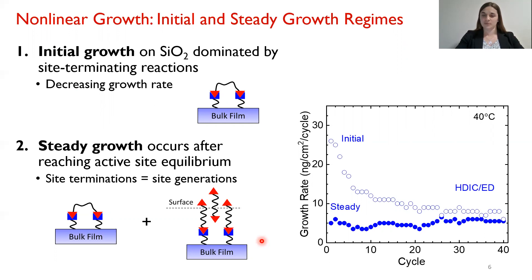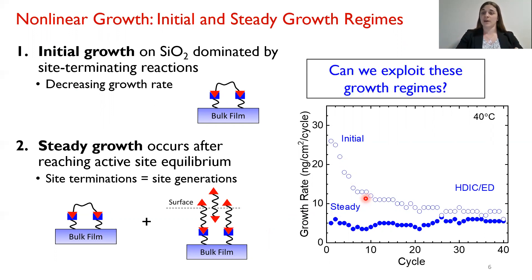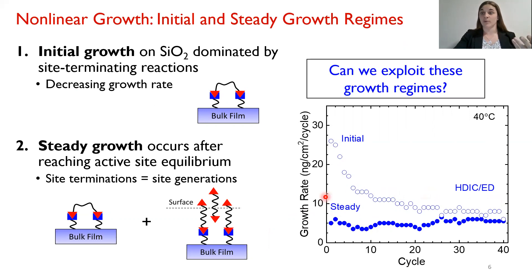The question becomes: if we see these very significant differences in growth rate and growth behavior, can we somehow exploit that? Can we control these two regimes — for example, to maintain a higher growth rate for longer and get our deposited film more quickly, or to completely terminate growth, which could be useful in area selective deposition applications or patterning?